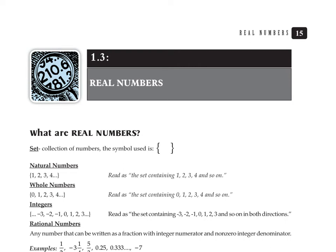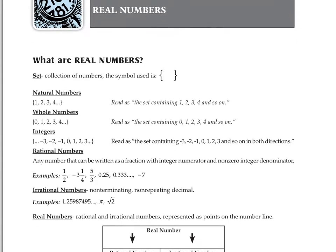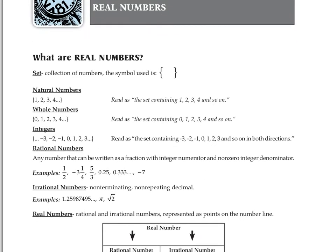Hi everybody. We're on section 1.3 in Al Groce's book, Developmental Math 2. We're going to talk about some concepts of real numbers today. The first question is: what are real numbers? Real numbers are the numbers that you are very familiar with — the numbers we use for counting and for graphing. The other types of numbers, which we're not going to study in this course, are imaginary numbers. So today we're just talking about real numbers.